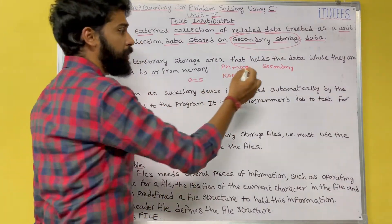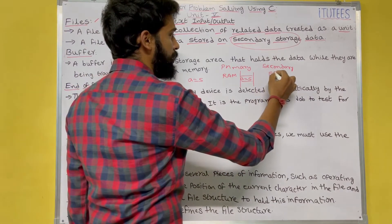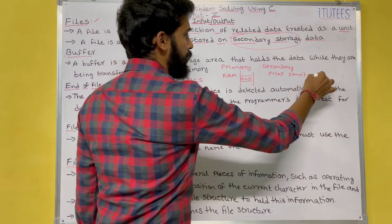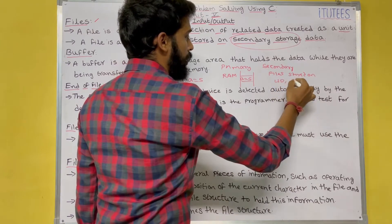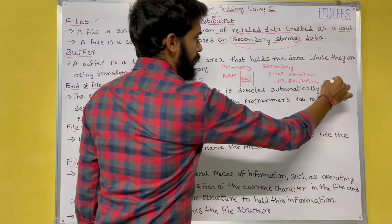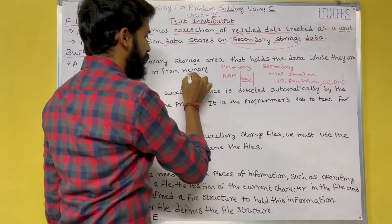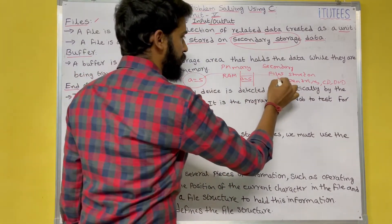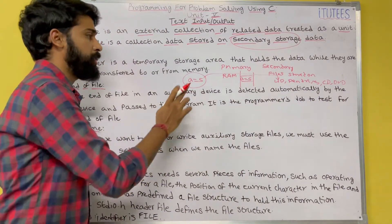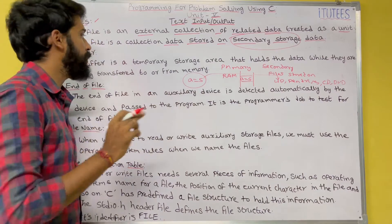Secondary memory is nothing but files stored on hard disk, pen drives, CDs, or DVDs. If you store data on a hard disk, pen drive, CD, or DVD, then we call that a file. To store this data permanently we need a file.